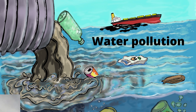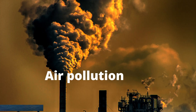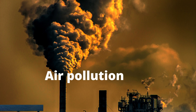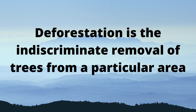Air pollution occurs when smoke from factories and cars, and the burning of garbage, releases carbon dioxide into the atmosphere, polluting it. As we learned earlier, a polluted atmosphere leads to acid rain, and a polluted atmosphere leads to global warming. So there is an example of how we have caused problems for ourselves.